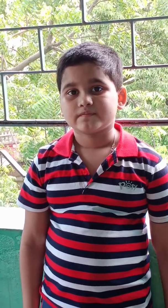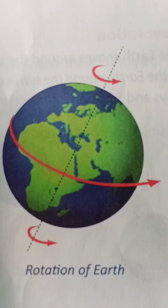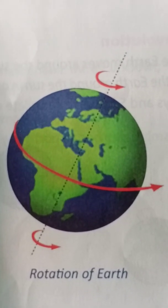In the same way, our Earth also spins about an imaginary line that passes through its center, called the axis of the Earth. The spinning movement of the Earth about the axis is called rotation. This is the picture of rotation of Earth. This rotation is from west to east, and the Earth takes nearly 24 hours to rotate once on its axis.